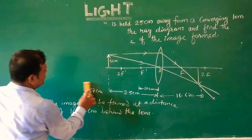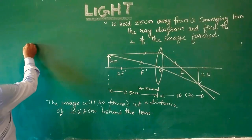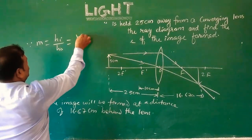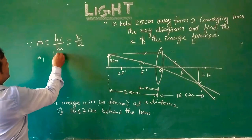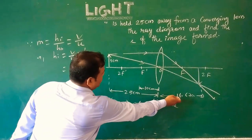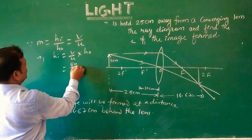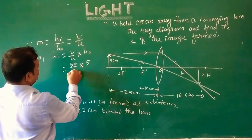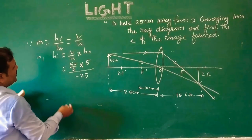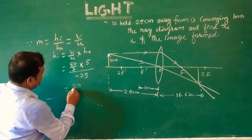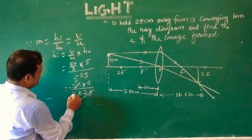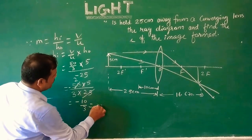Now we have to find the height of the image. We use magnification: M equals height of image divided by height of object, which equals V by U. So height of image equals (V/U) into height of object. V is 50/3, height of object is 5, and U is minus 25. Solving: (50/3) × 5 / (−25) = minus 10/3, that is minus 3.33 centimeter.